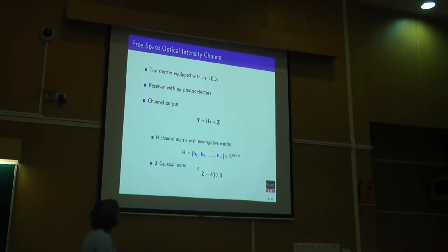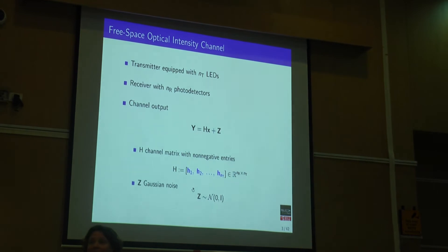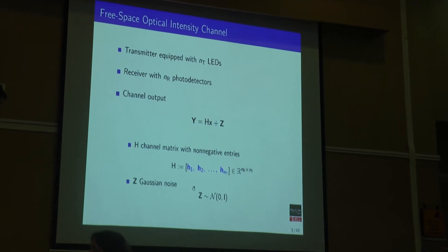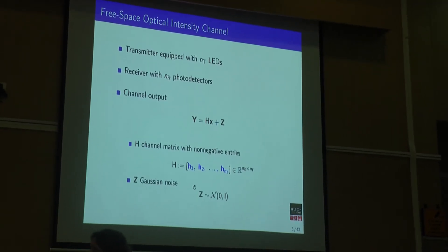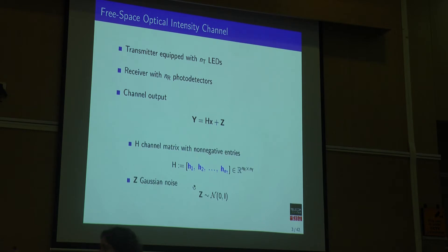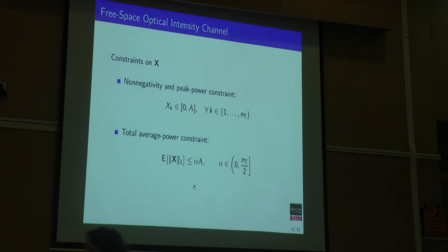So we assume superposition, and this brings us to the channel model. We assume we have NT transmit antennas and NR photodetectors at the receiver side. The channel is like the normal MIMO RF channel: Y = HX + Z, where Z is the Gaussian noise. What's important in our talk are the columns of H — the first column is the output signal if you use just the first antenna, and so on. Our results will depend on these columns.